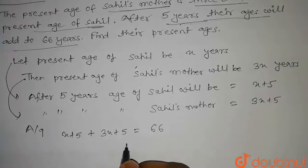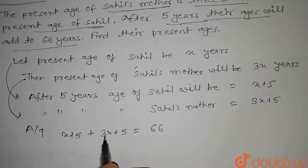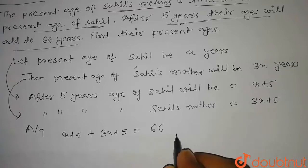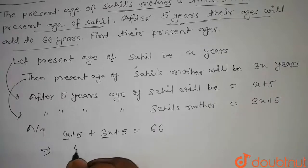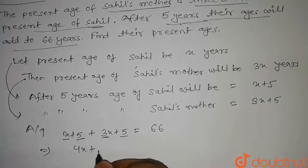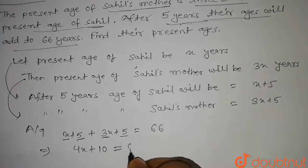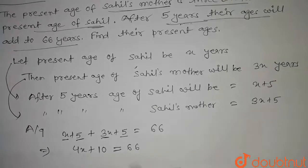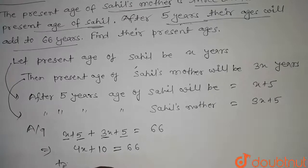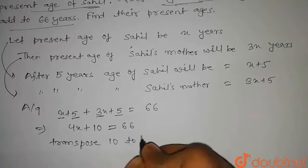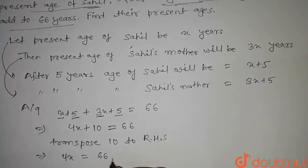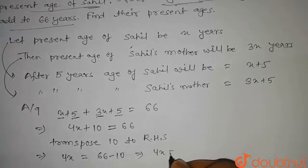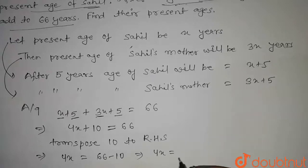Now we have to solve this equation and find out the value of x. On solving, we get x plus 3x, that is 4x, and 5 plus 5 equals 10, so 4x plus 10 equals 66. On transposing 10 to the RHS, we get 4x equal to 66 minus 10, that is 56.